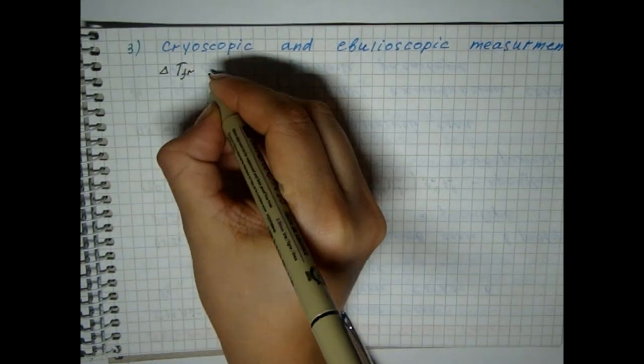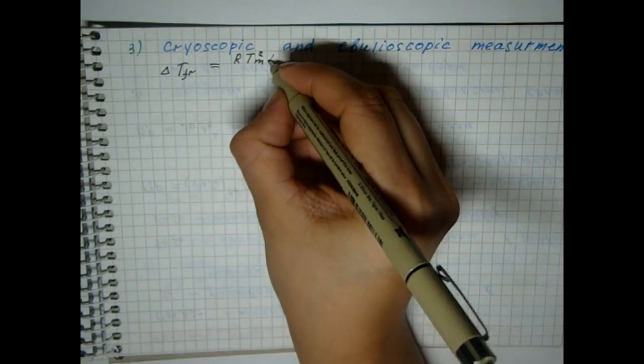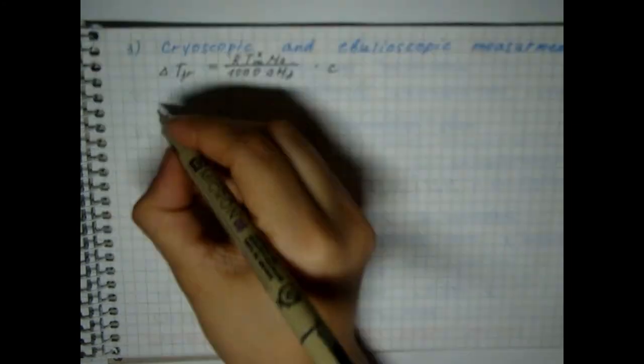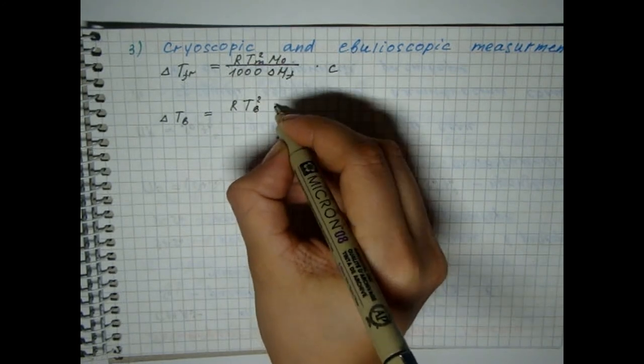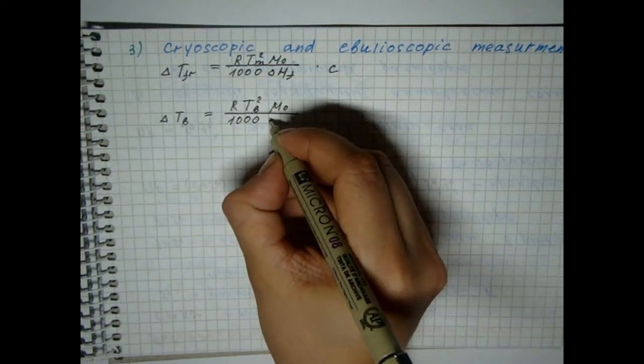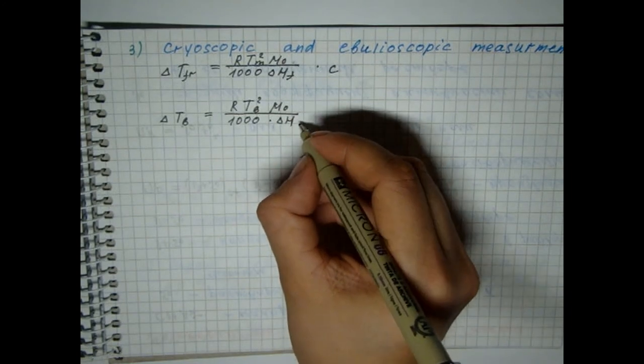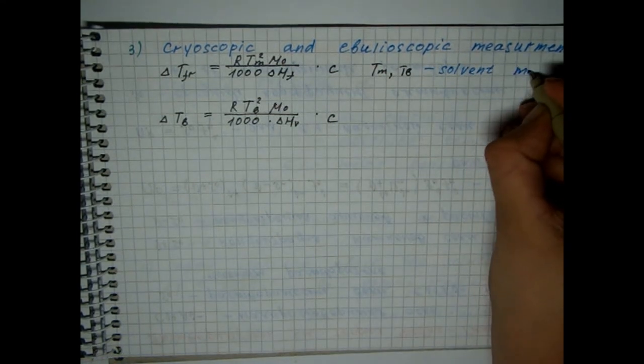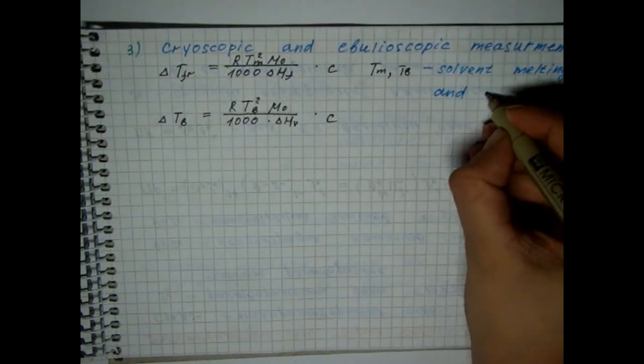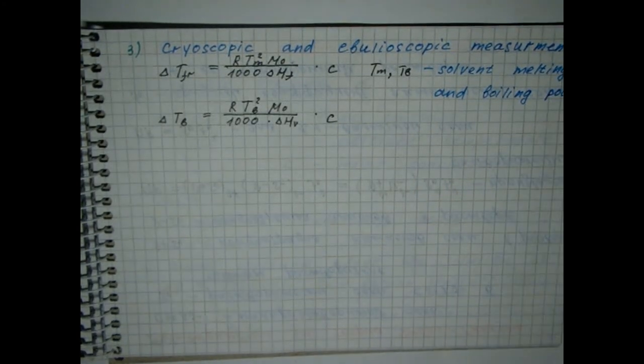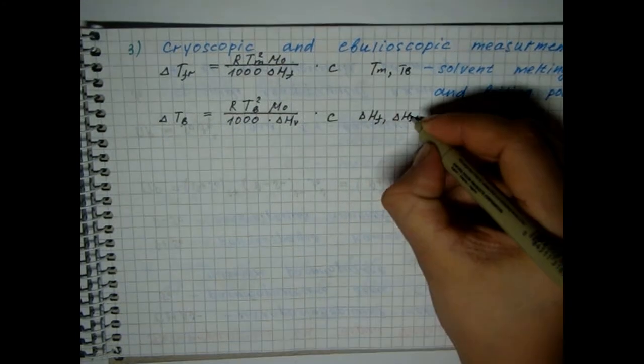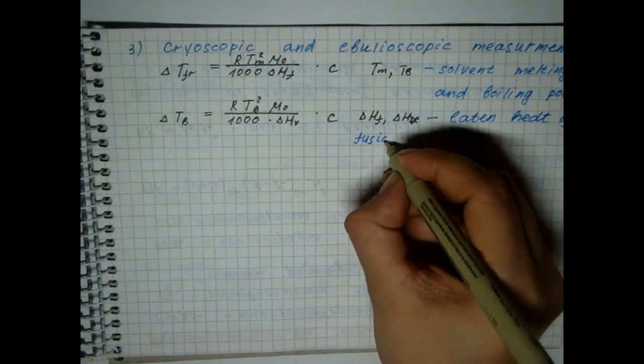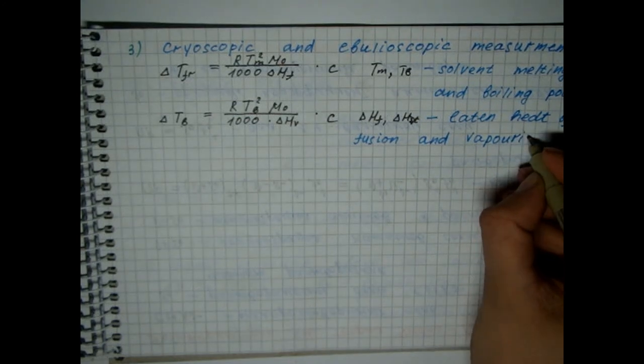The addition of a solute causes a decrease in the freezing temperature and an increase in the boiling point of the solution compared to a pure solvent. And in diluted solutions, this change can be associated with the number of dissolved particles.